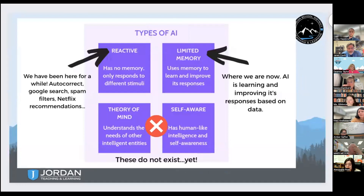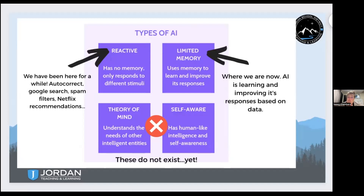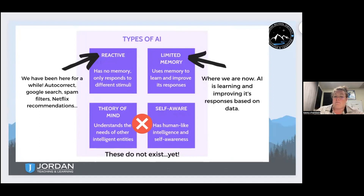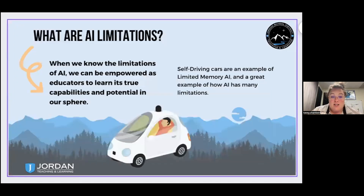A misconception is that teachers panic thinking AI is going to take their job — that it can think better and do their job better — which isn't true. There are four types of AI. Reactive AI has no memory and responds to stimuli — like when your phone fills in text or Netflix recommendations. Limited memory AI is where we're at now — it uses memory and data to improve its responses, learning and improving based on the data we input.